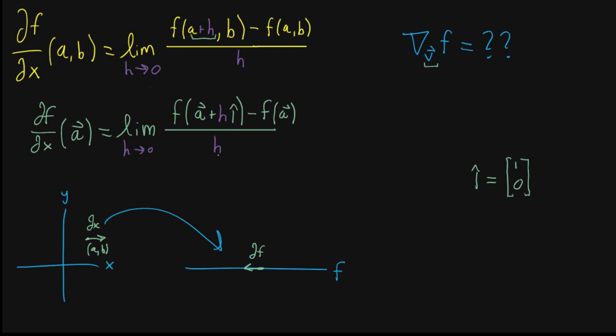And when I write it like this, it's actually much clearer how we might extend this idea to moving in different directions. Because now, all of the information about what direction you're moving is captured with this vector here, what you multiply your nudge by as you're adding the input.